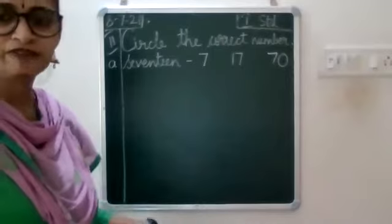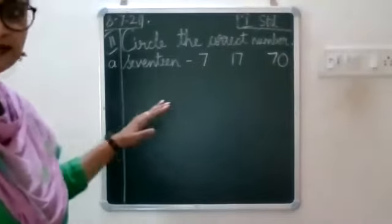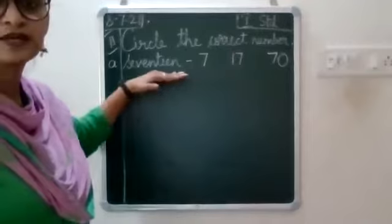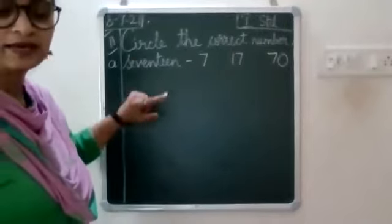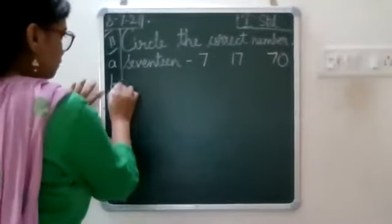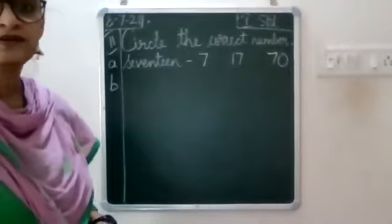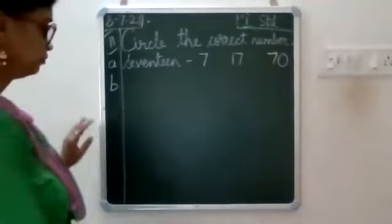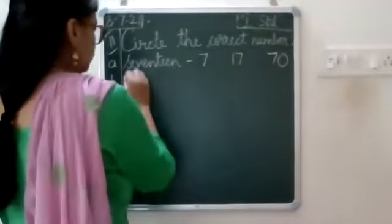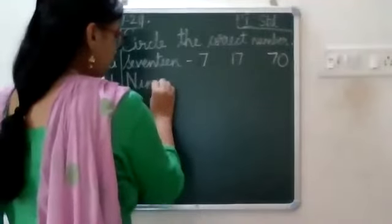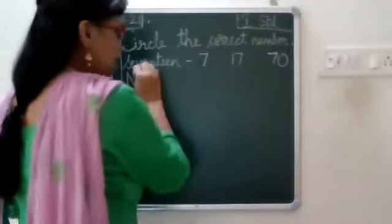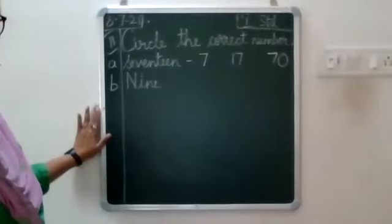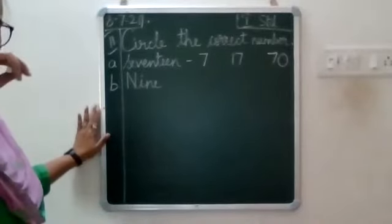First we will take down all 5 questions, then we can start circling. This is the first one. Now again leave a line, write B in the margin. Write capital N-I-N-E, 9.